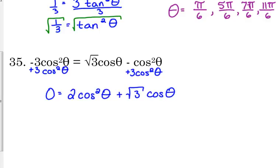When it comes to quadratic equations, what do we usually have to do? Factor. How can we factor this expression? There's a GCF — they both have a cosine. So we are going to factor out a cosine. They don't have anything in common in terms of a coefficient, so all we can do is take out a cosine.